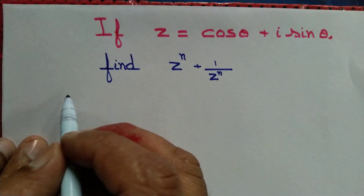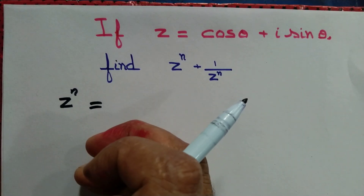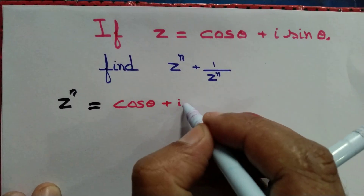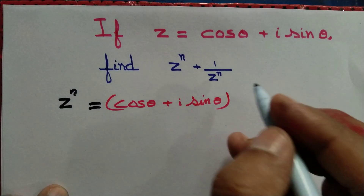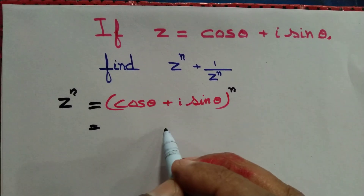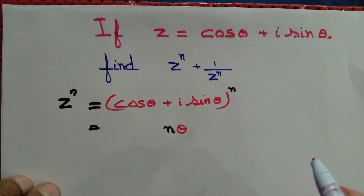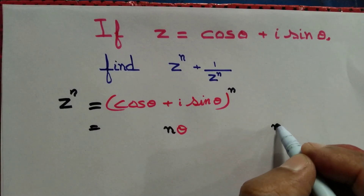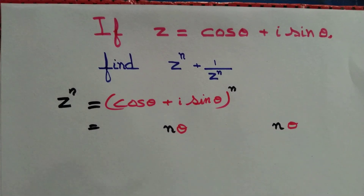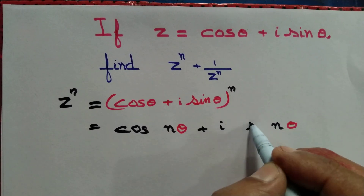So let's apply De Moivre's theorem. z to the power n equals cos θ plus i sin θ, whole thing to the power n. By De Moivre's theorem, this power can simply be used to multiply with the angle θ. So we obtain cos nθ plus i sin nθ.